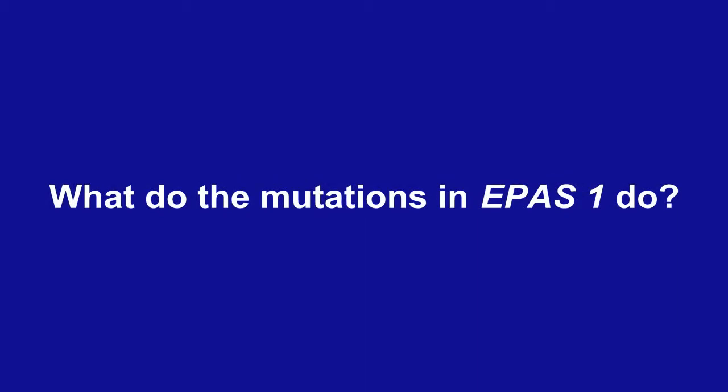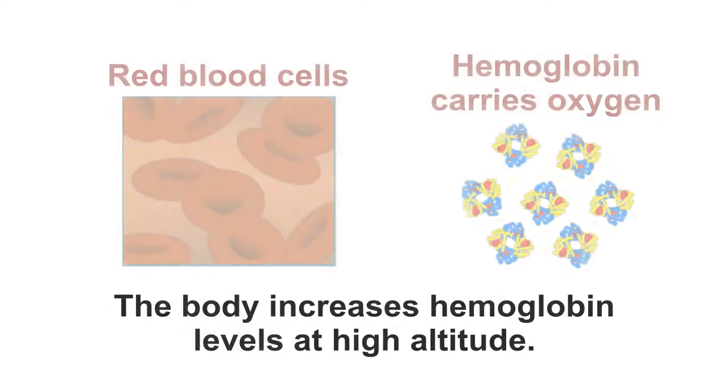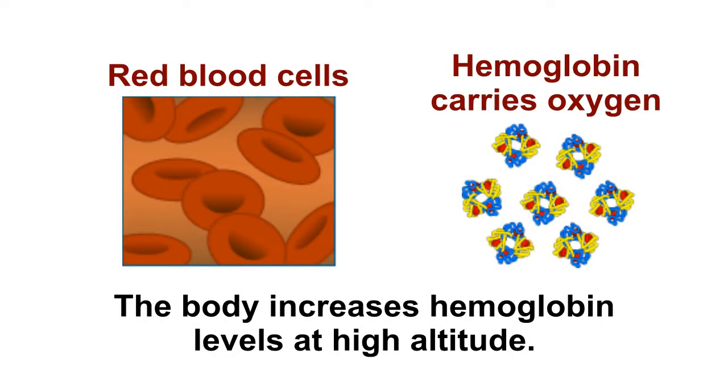What do the two mutations in the EPAS1 gene actually do in the body? The answer may be surprising. The physiological response to high-altitude involves increasing the number of red blood cells because red blood cells contain a protein called hemoglobin that binds oxygen and transports it to the tissues. So by increasing hemoglobin concentration, we can maintain function in the body.